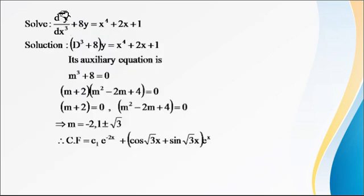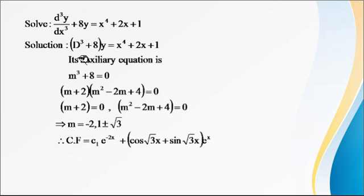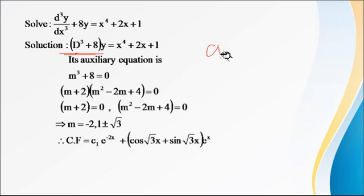Let us look at an example: solve d³y/dx³ + 8y = x⁴ + 2x + 1. First, find the complementary function. For this, we equate f(D) = 0, giving the auxiliary equation m³ + 8 = 0.